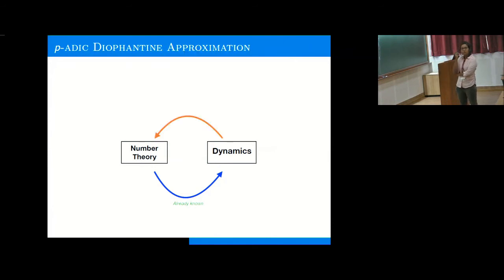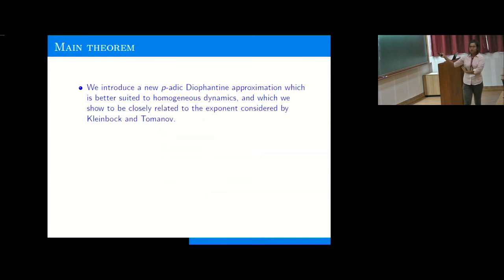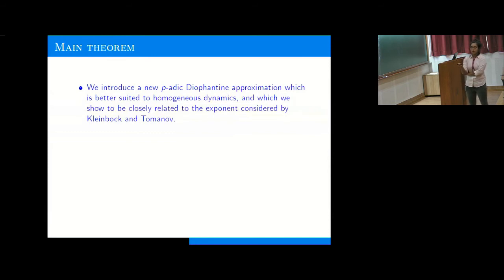It was not clear how to get from dynamics back to number theory, but we managed to do that. For this, we introduced a new p-adic Diophantine approximation which is more suited to homogeneous dynamics. The exponents of this new approximation and the previous one considered by Kleinbock-Tomanov and Sprindžuk turn out to have a nice relationship, which I will describe.